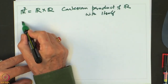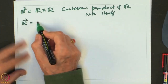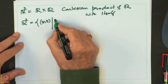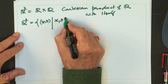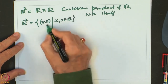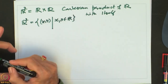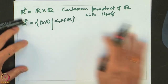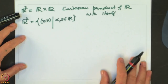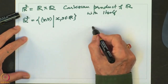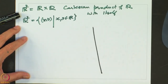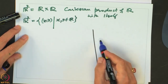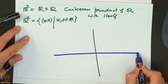R2 is nothing but the set of ordered pairs (X, Y) where X and Y both belong to R. What is the geometric representation of this? We take this paper as the plane and on the plane, we draw two lines — one vertical and one horizontal.